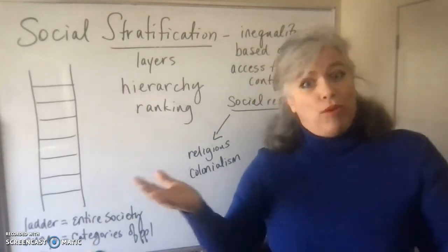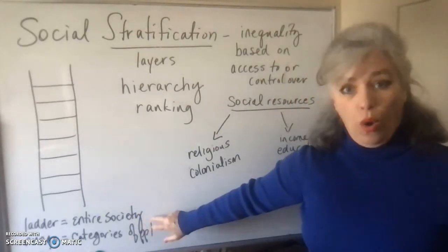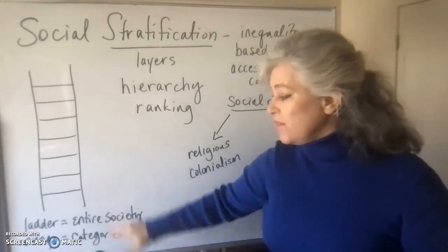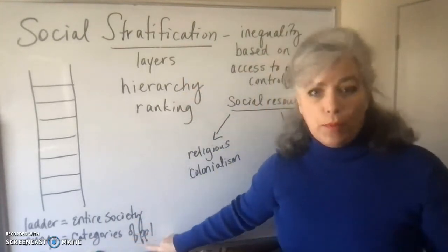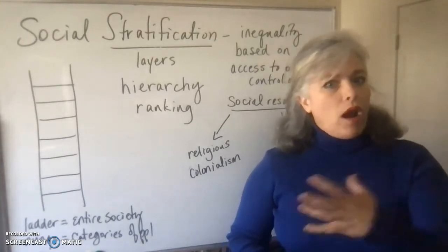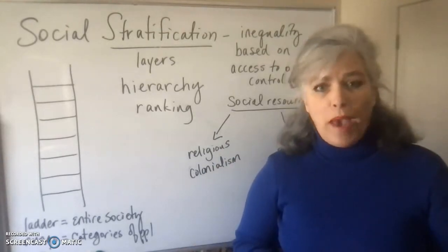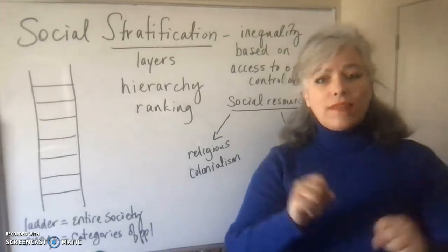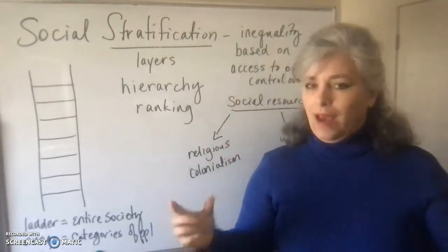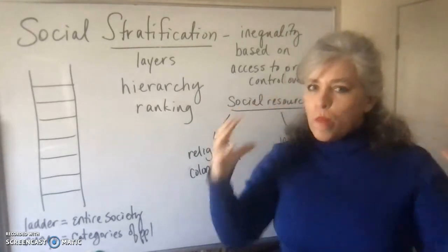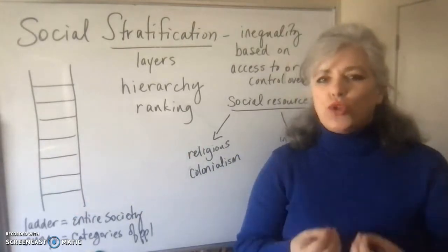You see this ladder on the screen — probably some of my best artwork to date — but this ladder represents society as a whole on a macro scale. The individual rungs on the ladder represent these layers, or the different rankings of different categories of people in society. A category of people is a large social grouping — not a social group — but a grouping of people spread across a population who share the same social characteristics.